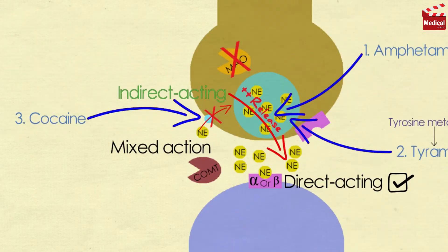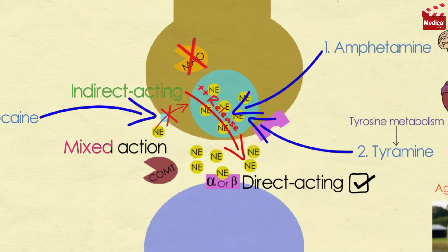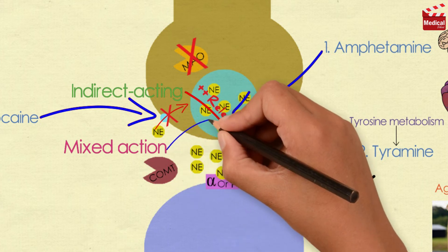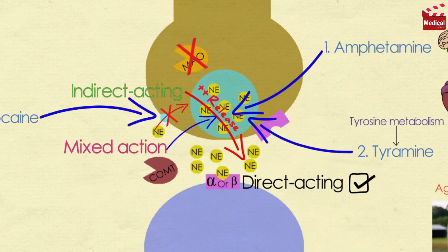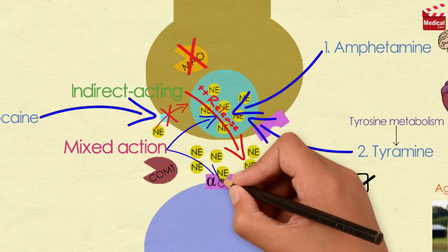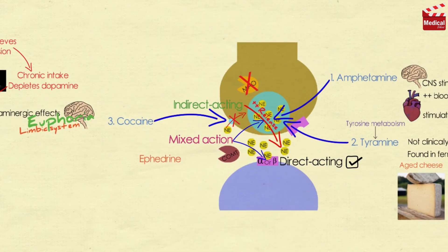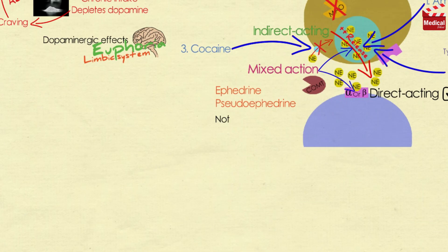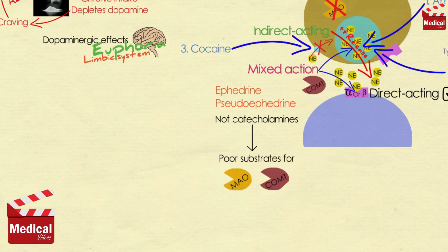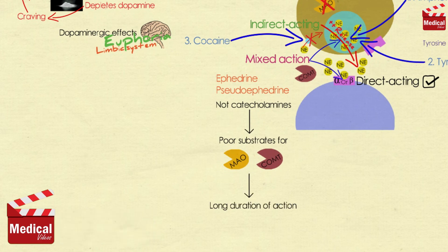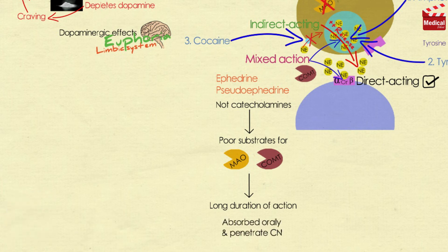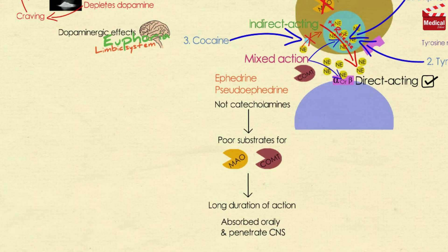Now let's talk about the last type of the adrenergic agonists: the mixed-action adrenergic agonists. They both act by enhancing the release of stored norepinephrine from nerve endings and also directly stimulate both alpha and beta receptors — such as ephedrine and pseudoephedrine. They are not catecholamines and are poor substrates for COMT and MAO, so they have a long duration of action. They are absorbed orally and they penetrate into the CNS, but pseudoephedrine has fewer CNS effects.